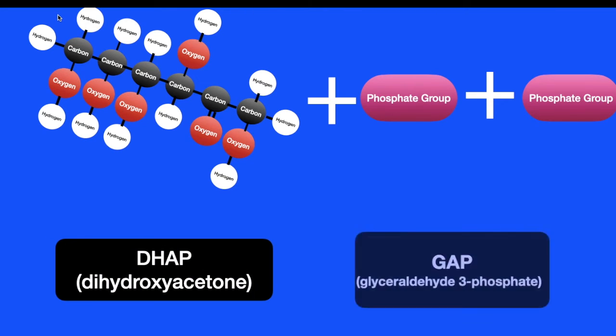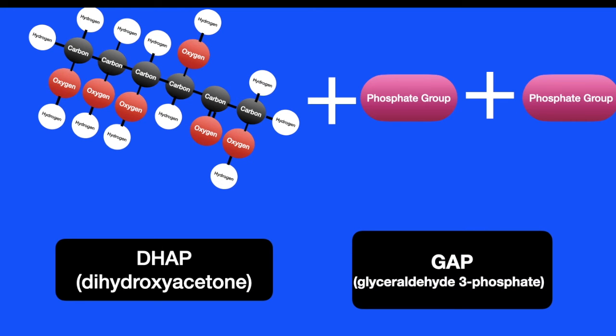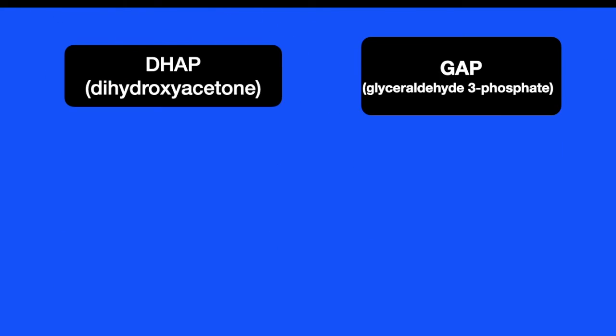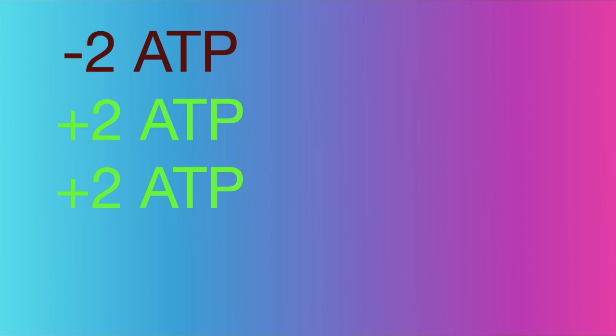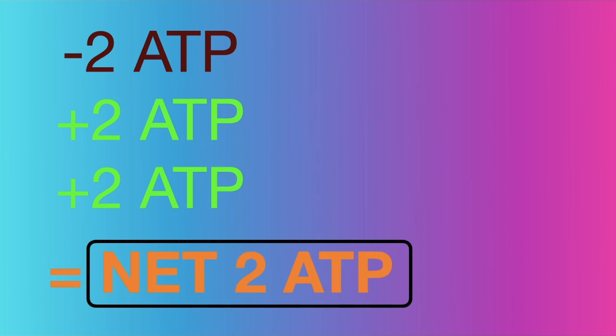The result is split into two molecules, which can each be used to produce ATP. Each molecule produces two ATP. Thus, the net ATP produced is two ATP, as two ATP is used and four is produced.